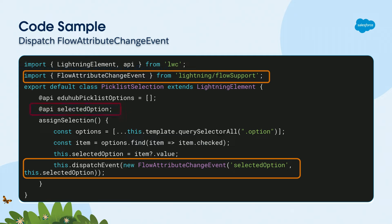One thing to be careful about: in the FlowAttributeChangeEvent, the attribute you are passing must be decorated with the @api decorator and should be available as an output in the XML configuration file. Without that, the flow won't be able to recognize the FlowAttributeChangeEvent and nothing will happen on the screen.